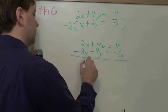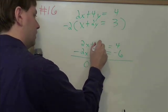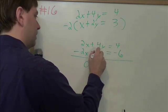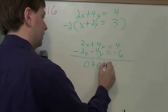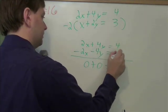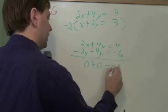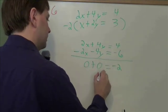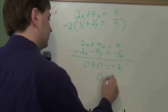2x minus 2x is 0. What is 4y minus 4y? 0 again. And what is 4 plus minus 6? That's minus 2. And then simplifying that, we get 0 equals negative 2.